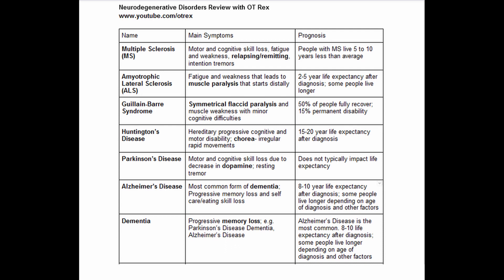Multiple sclerosis has motor and cognitive skill loss, fatigue, and weakness. The main thing I remember is the relapse-remitting pattern — I bolded that. People with MS live 5 to 10 years less than average.